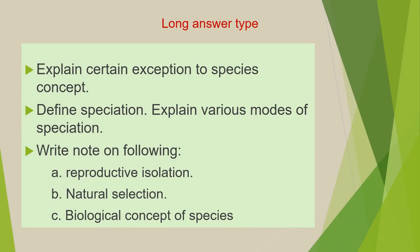The third category is long answer type questions, which are explanatory in nature and you have to support your answer with diagrams, flow charts, and tables. The first question of this category is: explain certain exceptions to species concept. Next is: define speciation and explain various modes of speciation in detail. The last question of this category is: write a note on the following — (a) reproductive isolation, (b) natural selection, (c) biological concept of species.